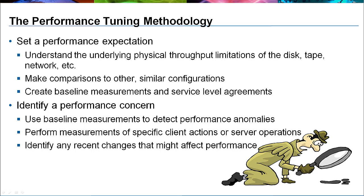It is best to identify performance anomalies as quickly as possible so as to take action before things get worse. Use baseline measurements to spot problems. For example, a backup from last night that takes much longer or is trending longer over a period of time is a strong indication that performance is degrading. Often performance issues are related to recent changes to the environment. Identify any possible changes and consider the effect of these changes.